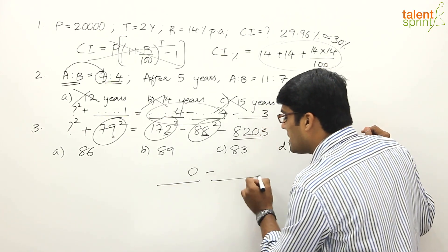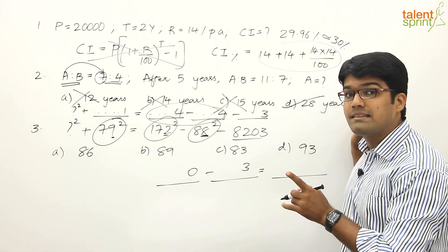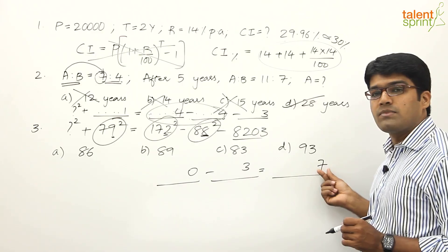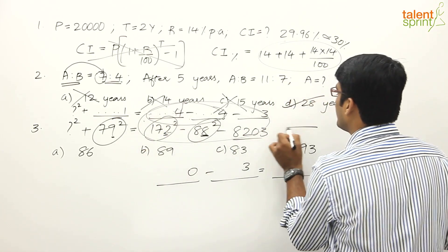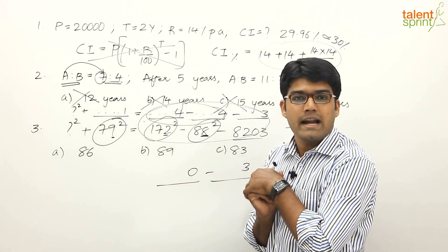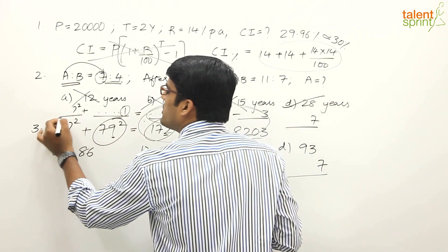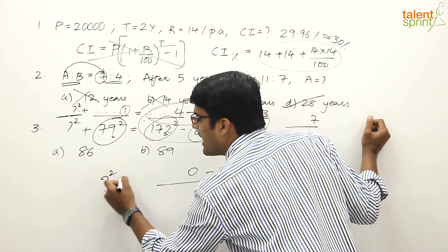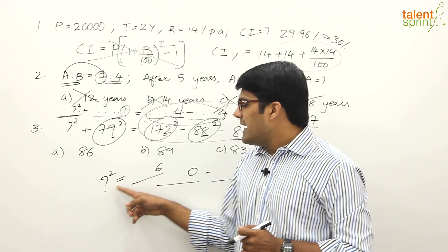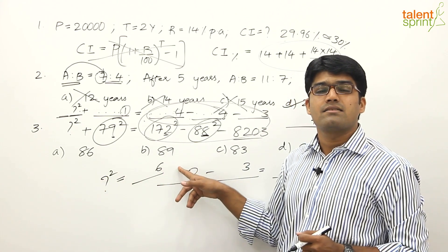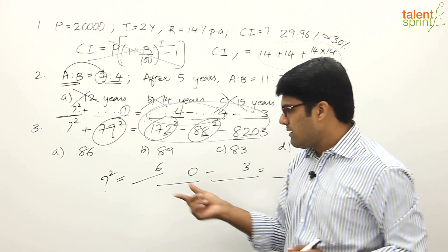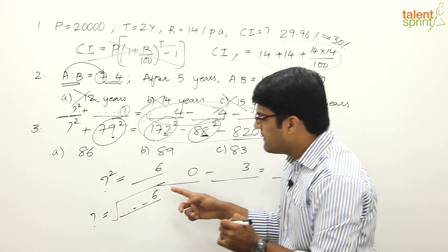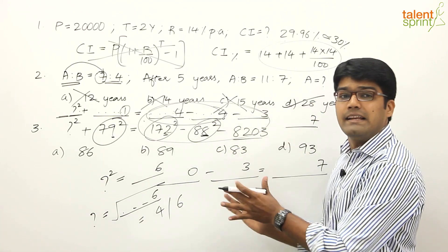Since the right-hand side ends in 7 and the left-hand side is ?² + 79², and 79² ends in 1, we need ?² to end in a digit such that the unit digits sum to 7. So 1 + 6 = 7, meaning ?² must end in 6. A number whose square ends in 6 must itself end in either 4 or 6. Therefore, the question mark must end in 4 or 6.